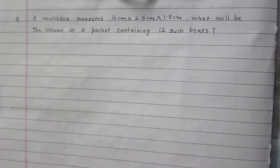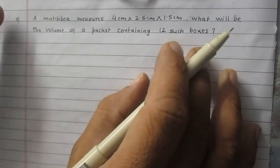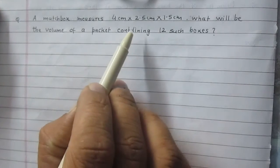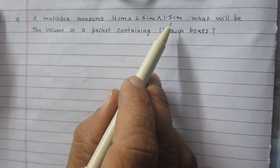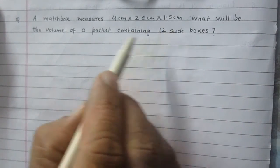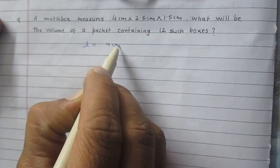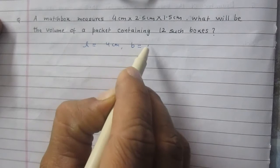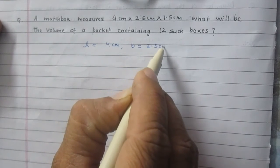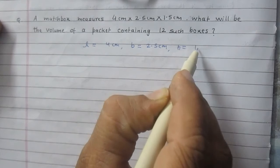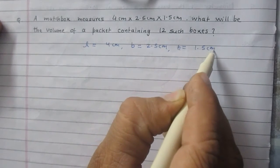We are given the dimensions of a matchbox. It is 4 cm by 2.5 cm by 1.5 cm. It means the length of a matchbox is 4 cm, its breadth is 2.5 cm and its height is 1.5 cm.